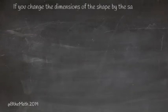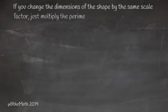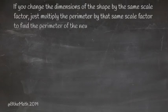If you change the dimensions of the shape by the same scale factor, the shortcut is just multiply the perimeter by that scale factor to get the perimeter of the new shape.